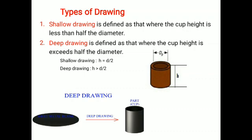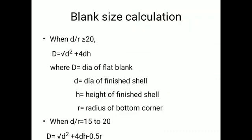These are very important types of drawing. Let us go for how to calculate the blank size. A blank is the sheet metal required for cup formation. Blank size calculation is a function of the d/r ratio, where small d is the diameter of the finished shell and r is the radius of the bottom corner. If d/r is greater than or equal to 20, then blank size is calculated by the formula: capital D equals square root of (d² + 4dh), where capital D is the diameter of the flat blank in mm, small d is the diameter of the finished shell in mm, and h is the height of the finished shell in mm.